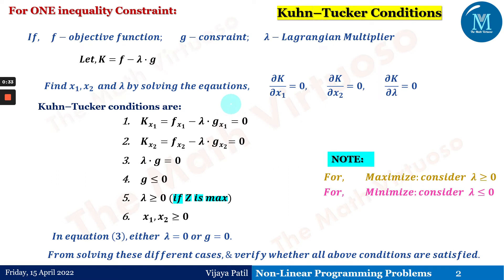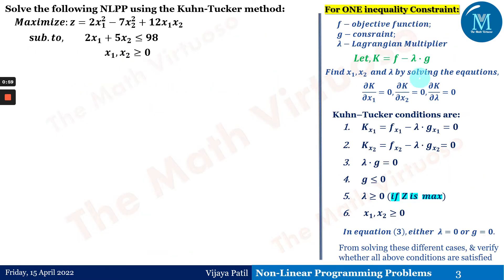This slide from the last session covers the KKT conditions — also known as Karush-Kuhn-Tucker conditions — in generalized form as well as with one inequality and two inequalities. Please follow the 'i' button to reach the previous session. I have purposely kept this summarization of the last slide so you can see how to find all these conditions simultaneously.